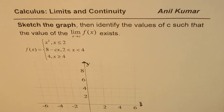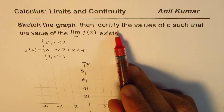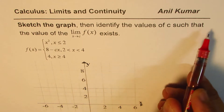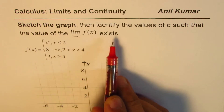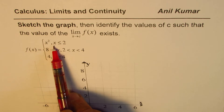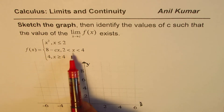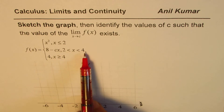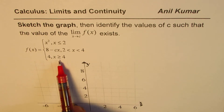I'm Anil Kumar sharing with you a test question on limits and continuity. The question is: sketch the graph, then identify the values of c such that the limit as x approaches c of f(x) exists. The function f(x) equals x² when x ≤ 2, equals 8 − cx when x is between 2 and 4, and equals 4 when x ≥ 4.